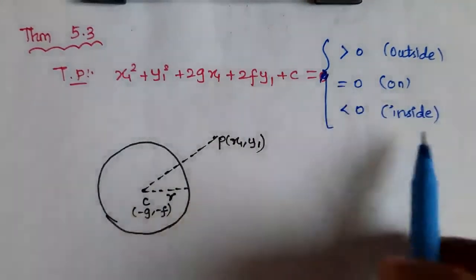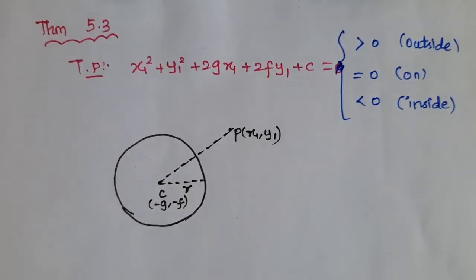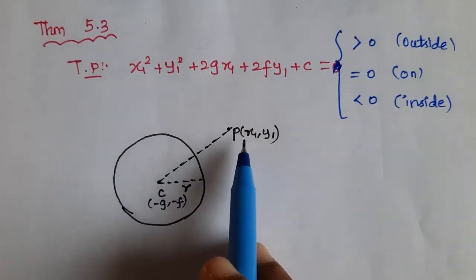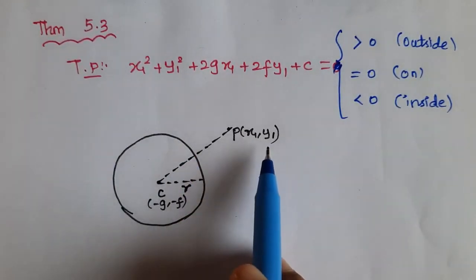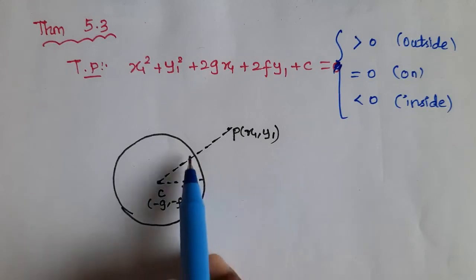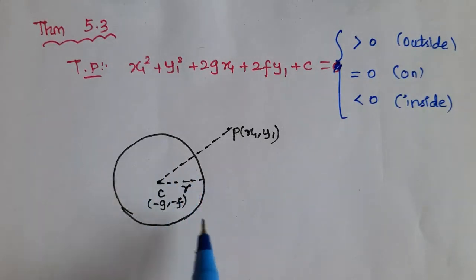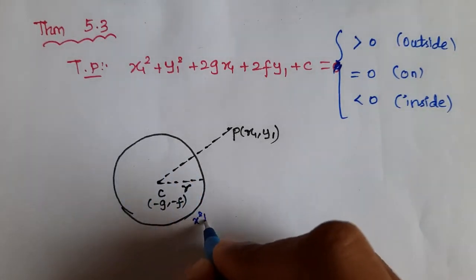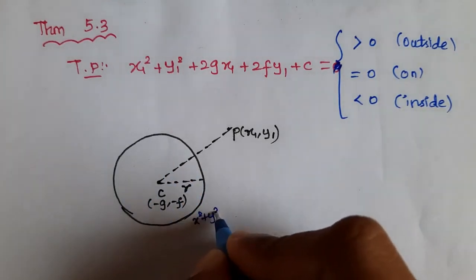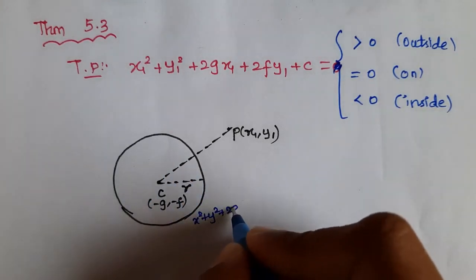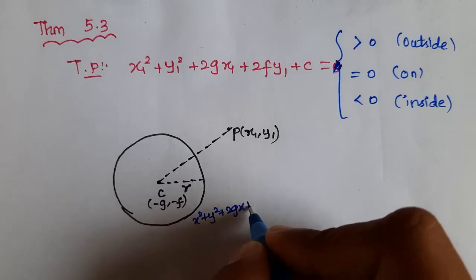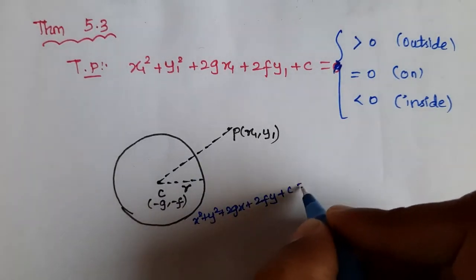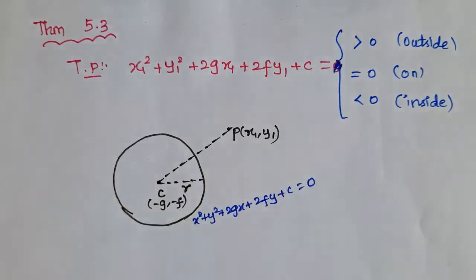This is what we have to prove. We take a point P with coordinates (x1, y1) and a circle. The equation of the circle is x² + y² + 2gx + 2fy + c = 0.